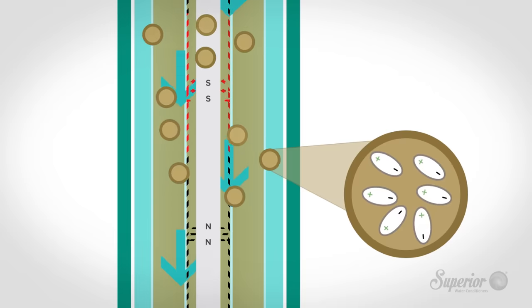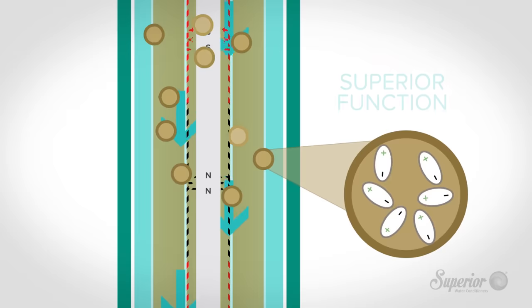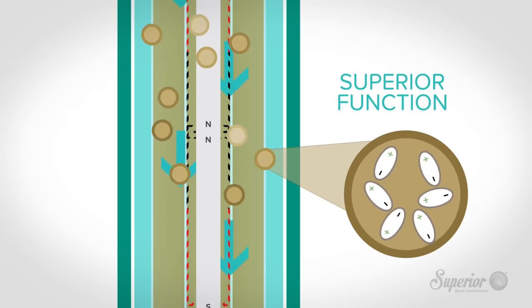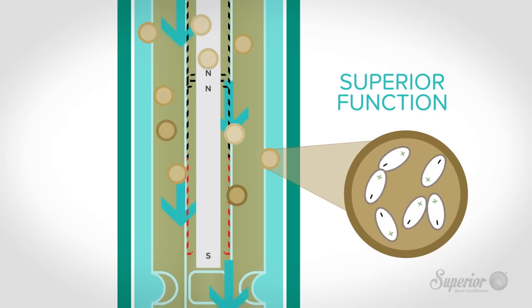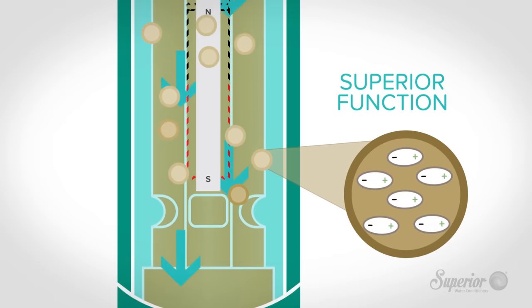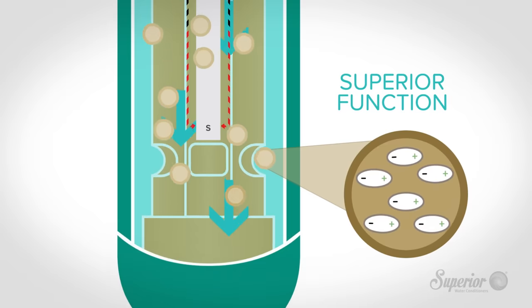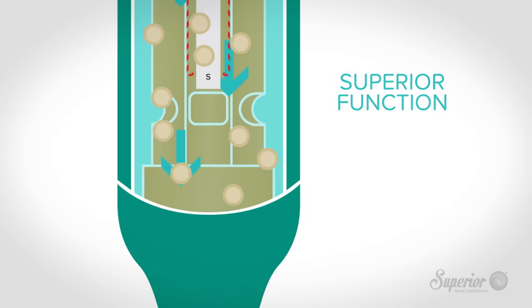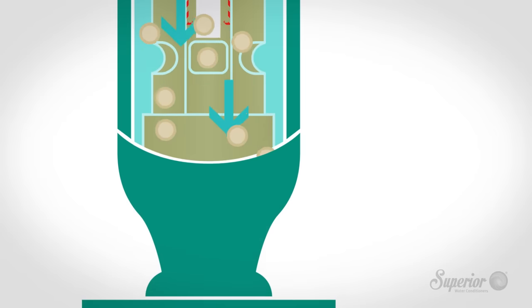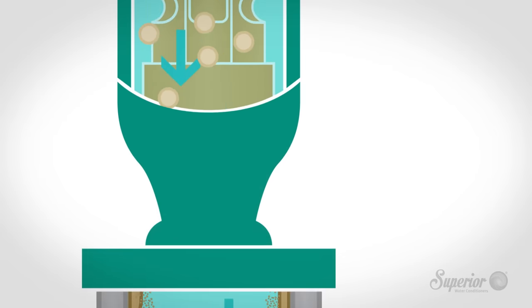Rather than being attracted, they will repel one another as they precipitate out of solution. Instead of forming scale, this precipitate called aragonite forms a microscopic layer, actually protecting plumbing and equipment against corrosion.